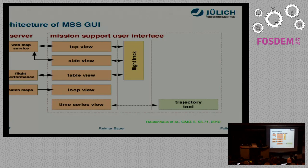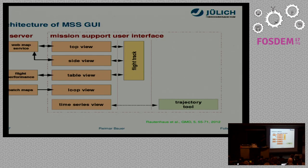The GUI application has several views. At the moment we have a top view — a horizontal view of the data — and a side view which is a vertical view of data along the flight path. You draw your flight path and it calculates how the data will look. There's also a table view with your waypoint coordinates, and a loop view that can display many images on your screen. There's also a flight performance module: you enter data about the aircraft's weight and fuel, so you know when you can't go further because there's not enough fuel, or when you can reach a higher altitude because the aircraft has burned fuel and is lighter.